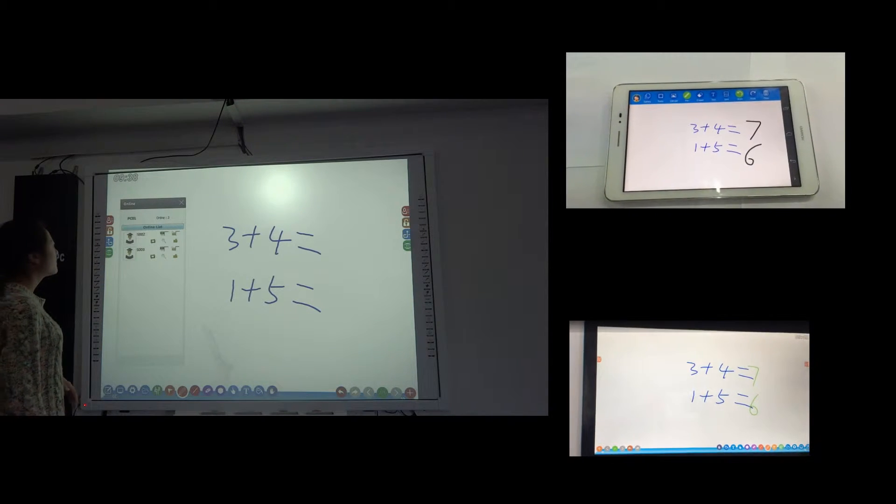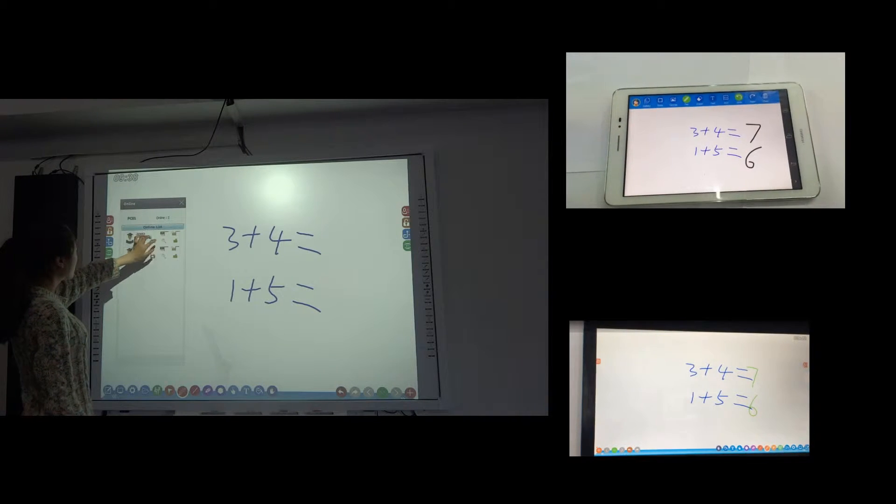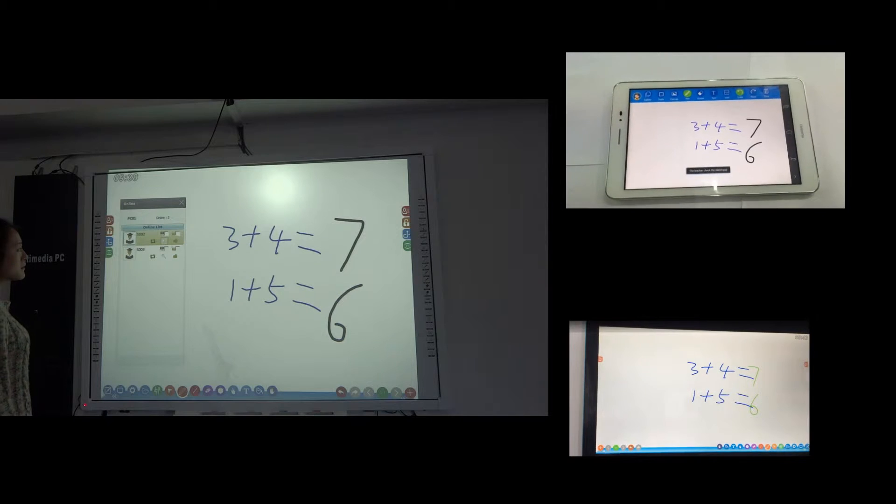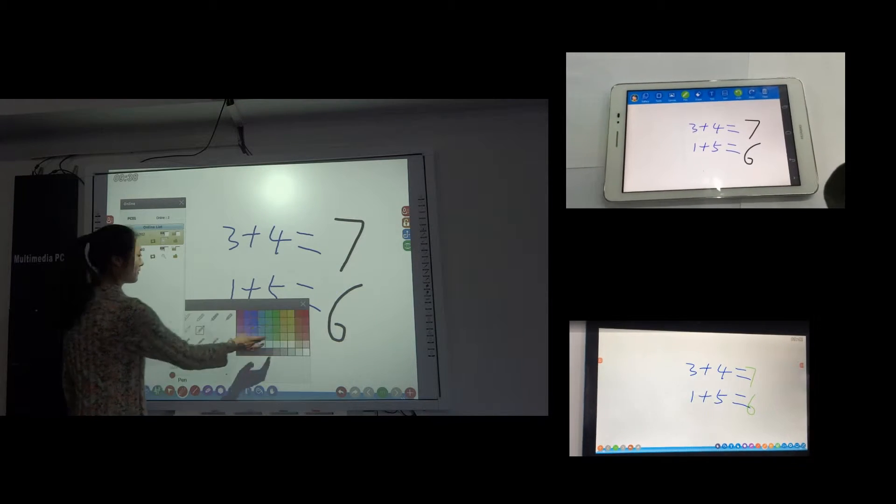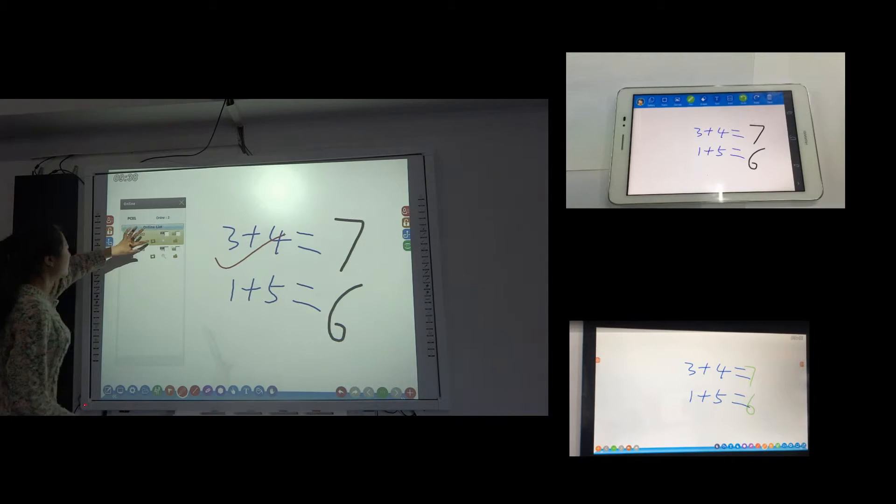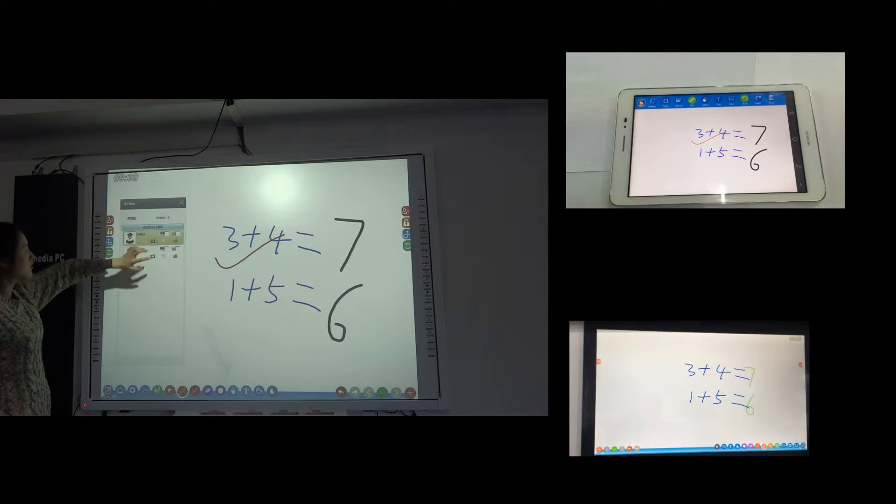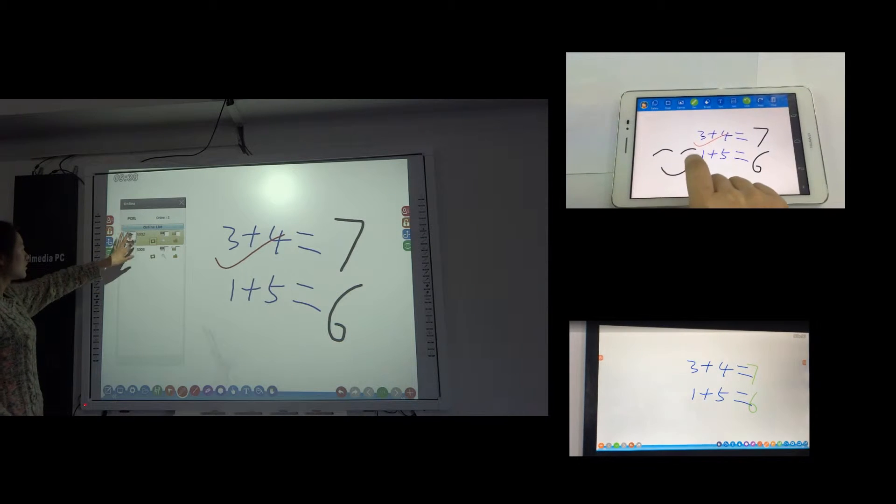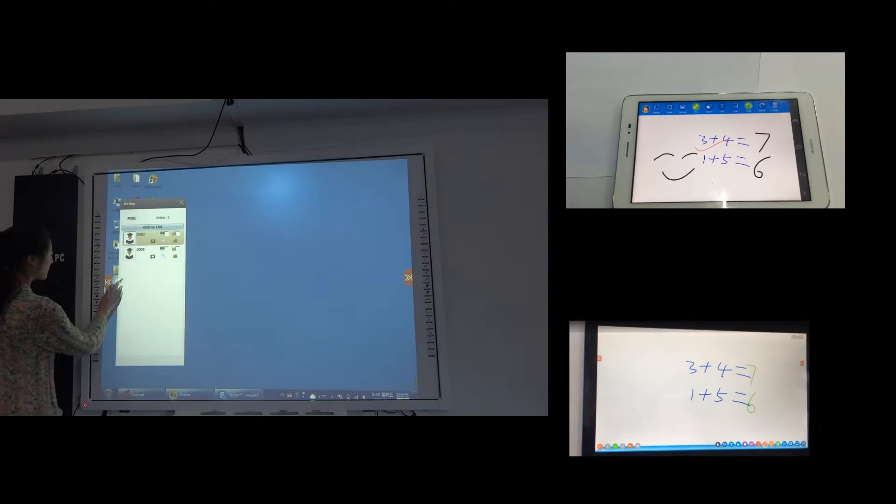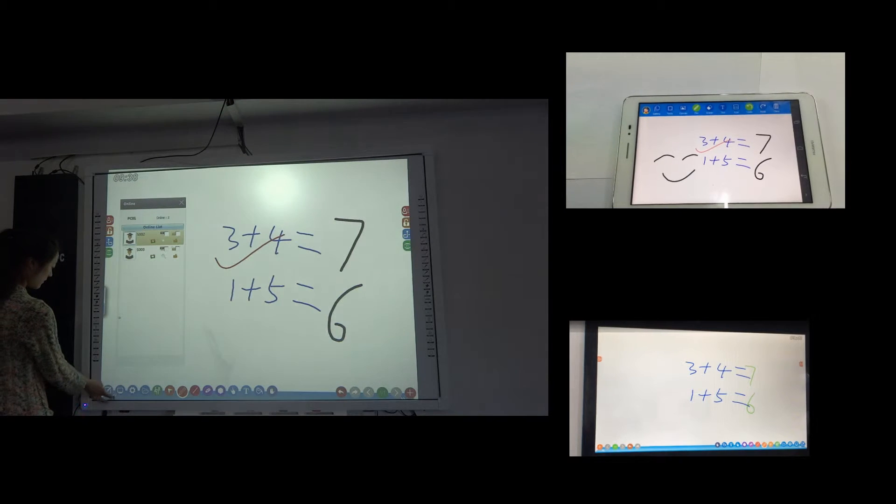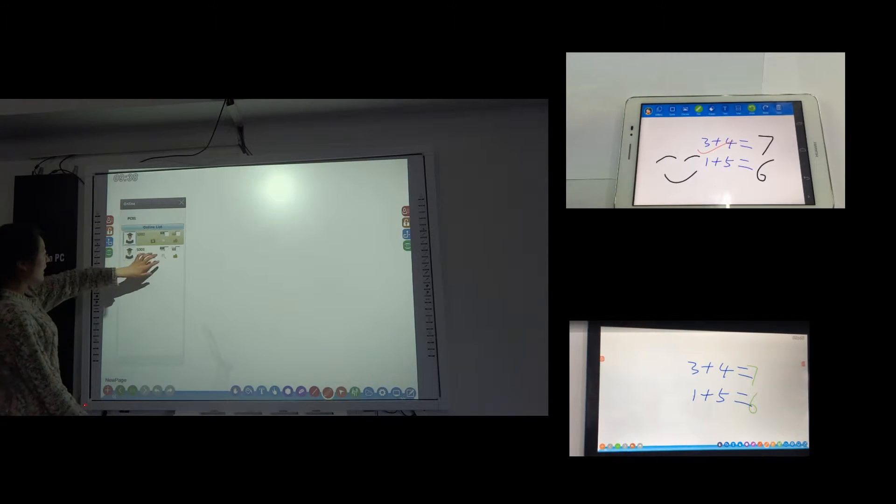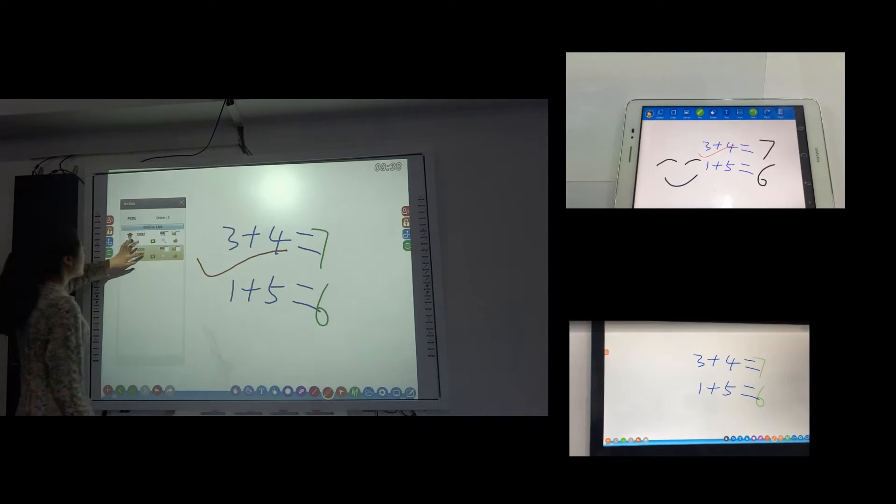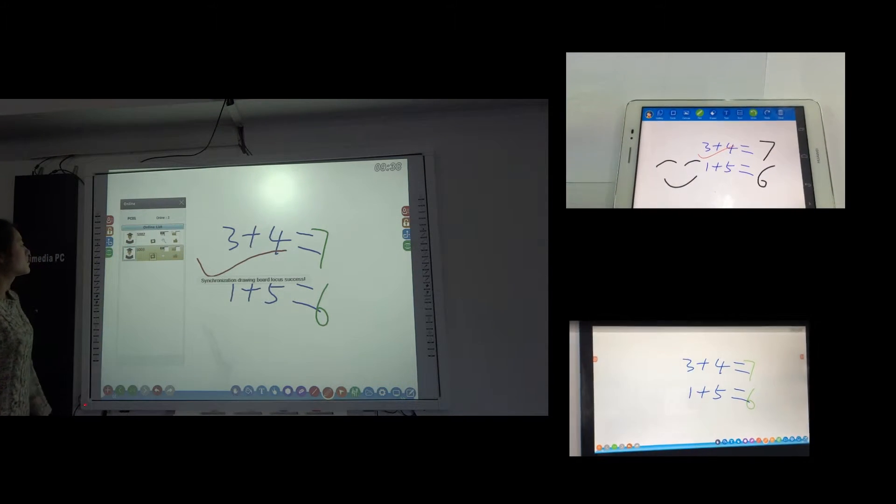Once students finish, the teacher can choose a student to check their tablet. This function transfers the board surface to student 2. We can also check student 3 and transfer only to student 3.